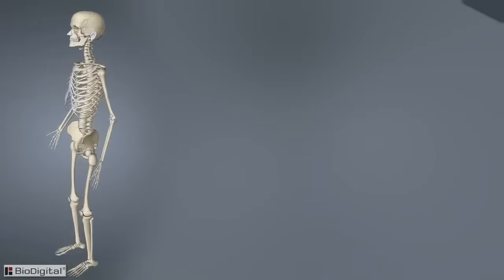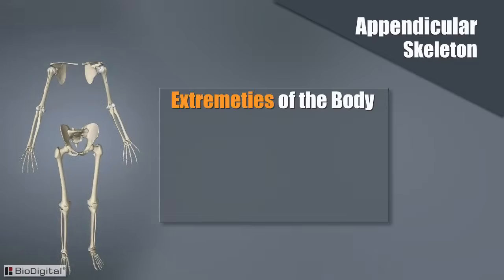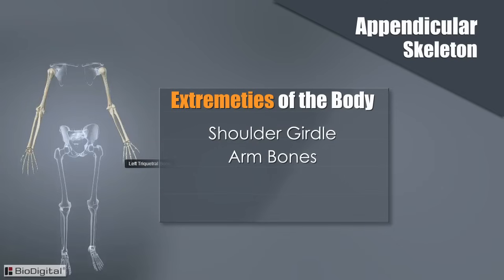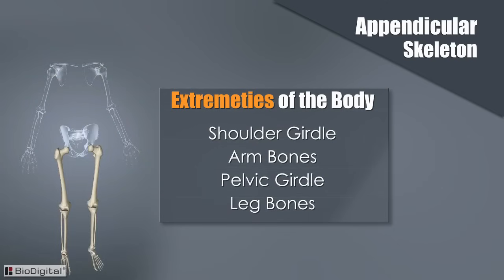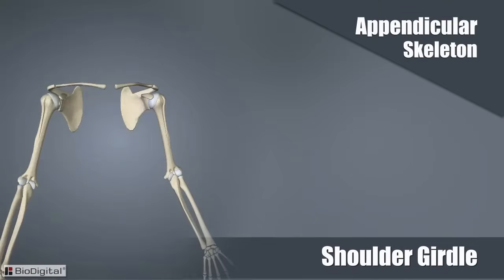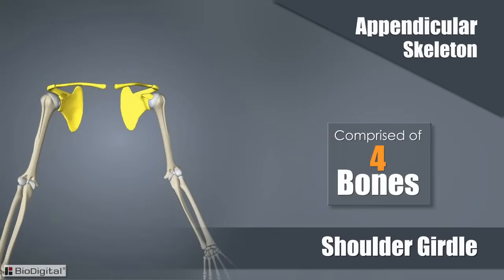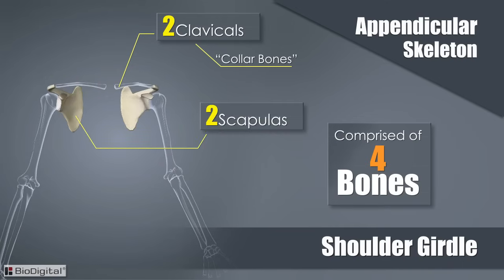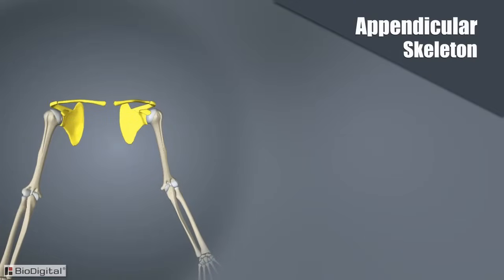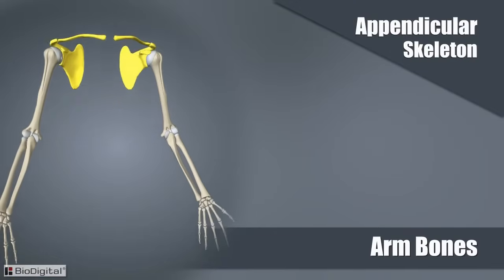The second major section of the skeletal system is called the appendicular skeleton. This section forms the extremities of the body, which are the shoulder girdle, arm bones, pelvic girdle, and the leg bones. The shoulder girdle is comprised of four bones. It's made up of two clavicles, known as the collar bones, and two scapulas, which are known as the shoulder bones. Together, these bones form the shoulder girdle, to which the arm bones attach.